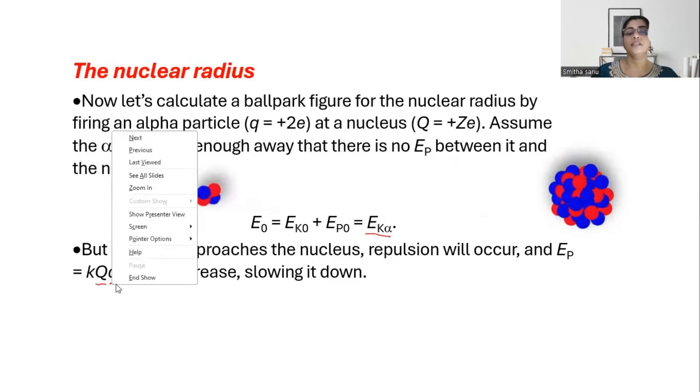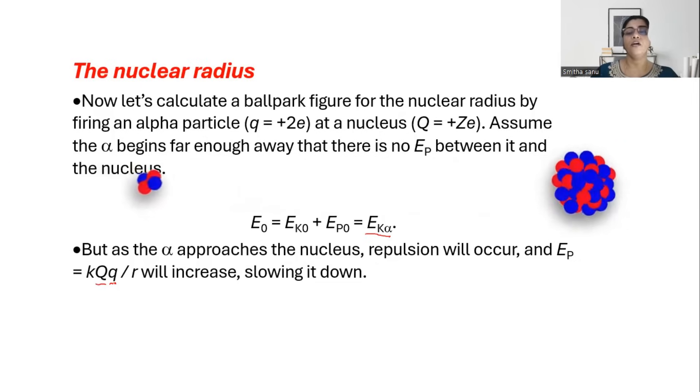If you know the proton number of a nucleus, if there are Z protons in a gold nucleus and the charge of each proton is plus E, then the total charge of the nucleus is proton number times the charge. While helium nucleus has two protons, so it has a charge plus 2E.